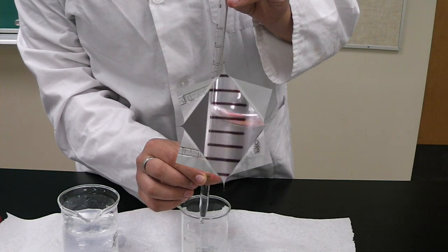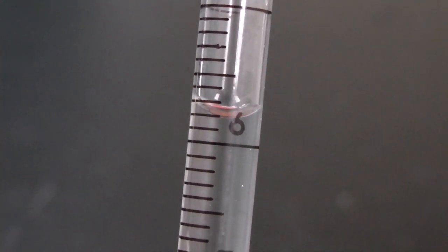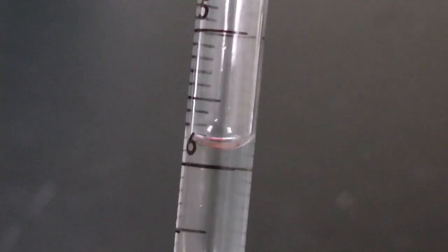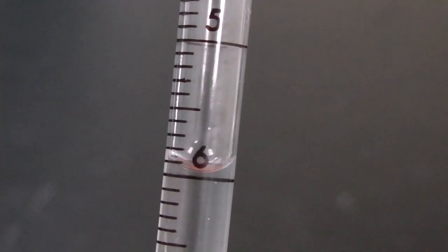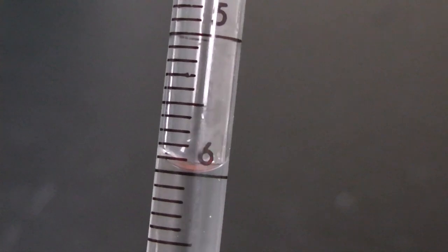In this example, I dispense five milliliters, so therefore I go from the one milliliter mark to the six milliliter mark, again rotating it carefully to only dispense the right amount of liquid.